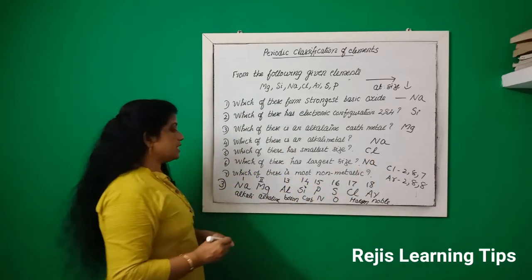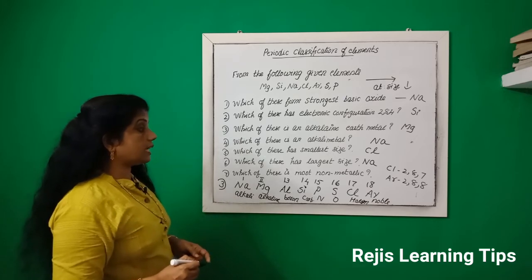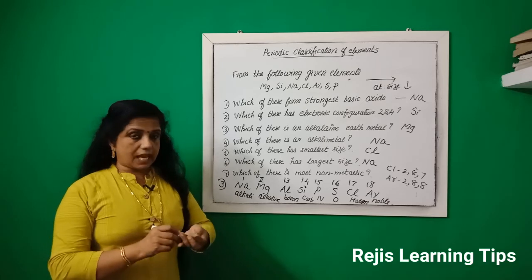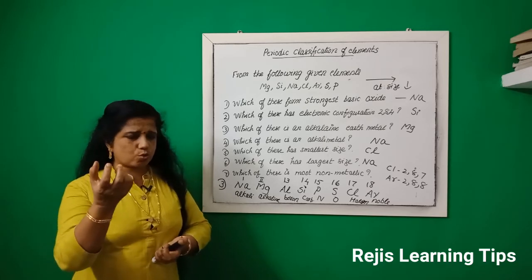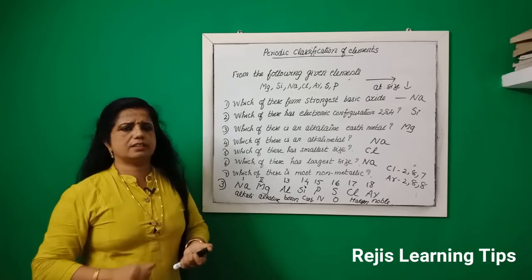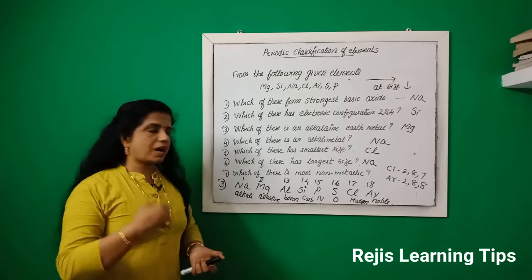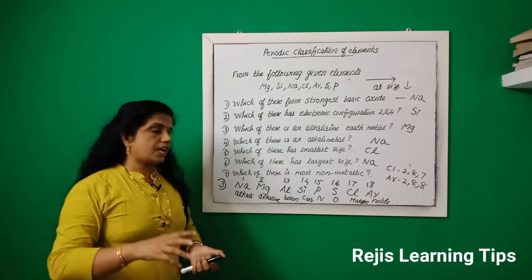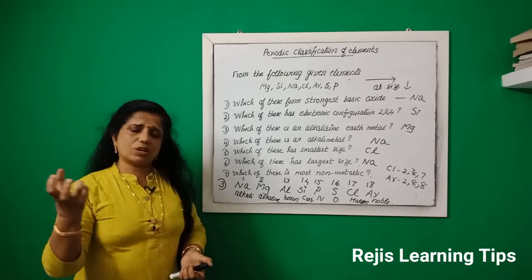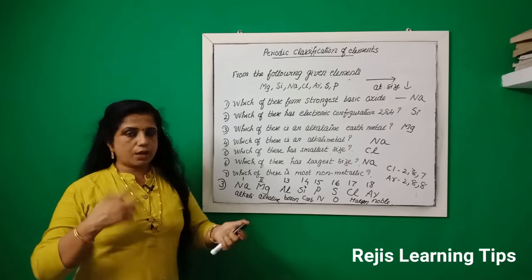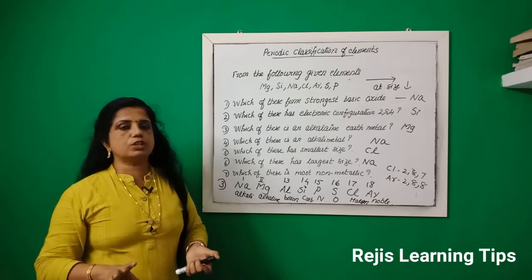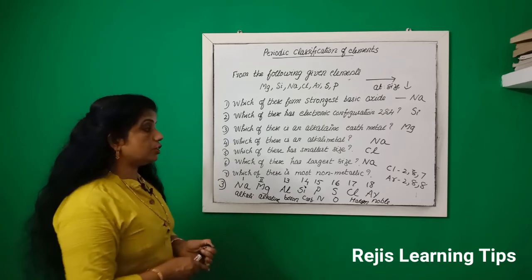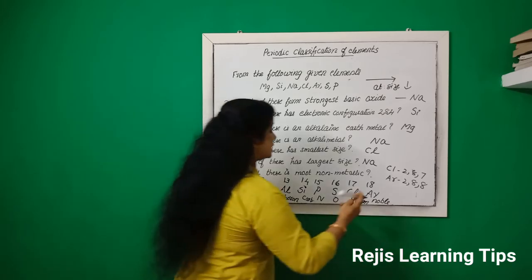Which of these is the most non-metallic? Non-metallic character means the outermost electrons are tightly held. Argon's outermost electrons are already complete, so chlorine is next — chlorine also has tightly held electrons due to high electronegativity. So the most non-metallic element among these is chlorine.